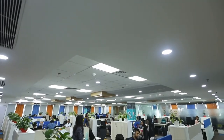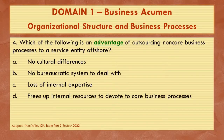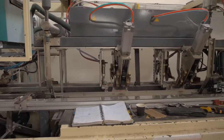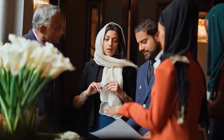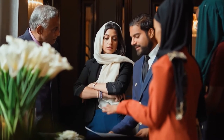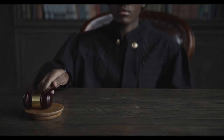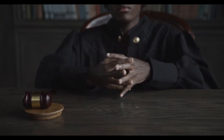We can eliminate choice A because cultural differences can exist when outsourcing non-core processes to an offshore organization in a foreign country — differences in business acumen, customs, or language and communication barriers. When outsourcing by offshoring, government bureaucracy is a potential risk, so we can eliminate that choice as well. There could be certain government laws, regulations, or chains of command that must be adhered to, making it a risk, not an advantage.